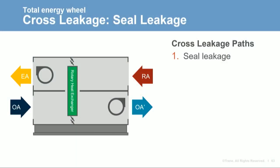Cross leakage can be wasteful and result in the system fans having to move more air than originally required. The system design can reduce cross leakage and minimize its impact. The first and largest source of cross leakage is at the wheel face where pressure differentials between the two air paths drive air movement — seal leakage. Air will leak from areas of higher pressure to areas of lower pressure — from the outdoor air section into the exhaust air section through the seal. Rubber non-contact blocks or nylon brushes can be used to reduce seal leakage.